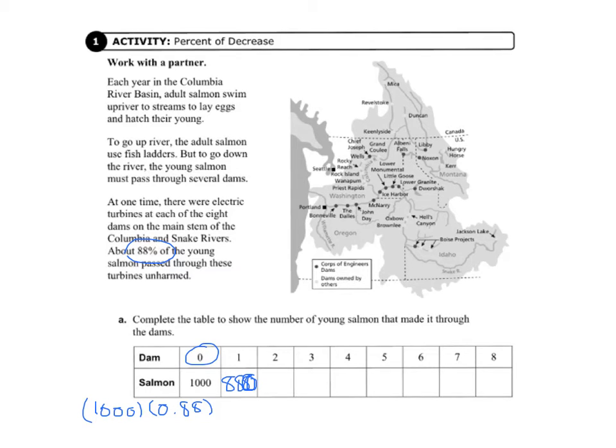Then we take 880 and multiply that by 88%, and we come up with about 774. There's a little rounding error there, but that's okay. Then we keep going. We take 774 and multiply that by 88%, and we have 681 who make it through unharmed. And then we have 599 and 527 and then 464 and then 408. And then finally, after the last dam, there are only 359 salmon that make it through unharmed.